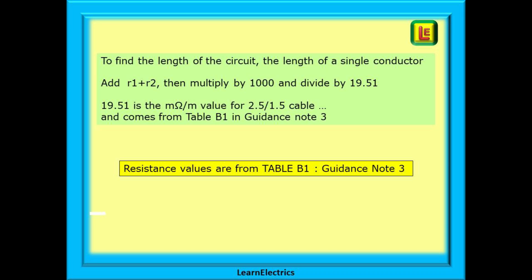And to find the length of the circuit, the length of a single conductor, add little R1 plus little R2, then multiply by 1000 and divide by 19.51. 19.51 is the milli-ohms per metre value for 2.5 1.5 cable, and this comes from table B1 in Guidance Note 3.